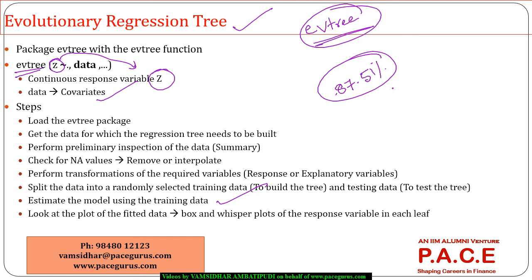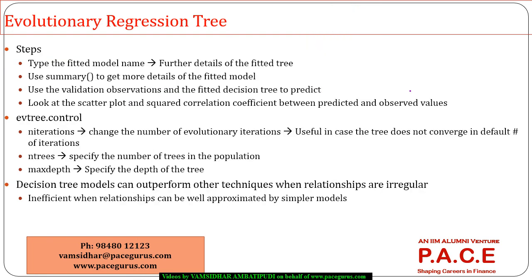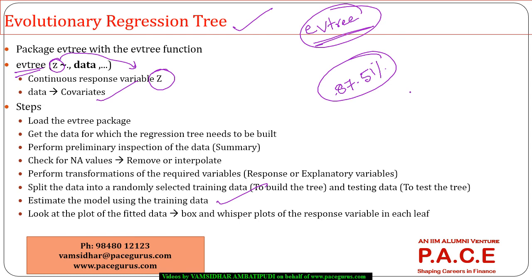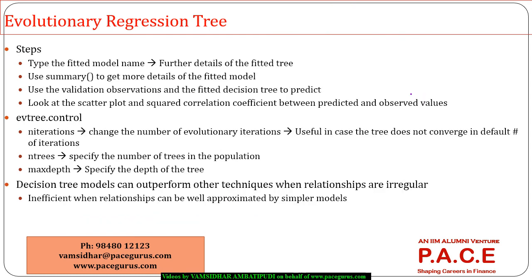The conditional inference regression tree gives 87.65% and the evolutionary tree gives 87.51% R-squared — more or less similar. To improve the model, we would need to look at other parameters influencing charges. All four models — preliminary regression tree (85.15%), linear model-based recursive partitioning (85.71%), conditional inference tree (87.65%), and evolutionary tree (87.51%) — have been fitted, summarized, and evaluated on the test data.